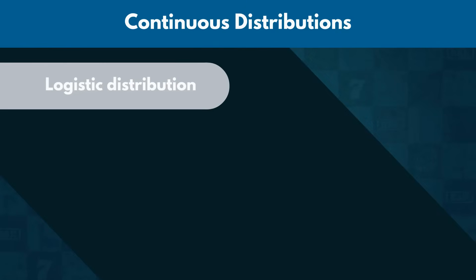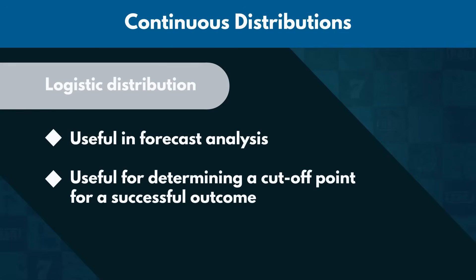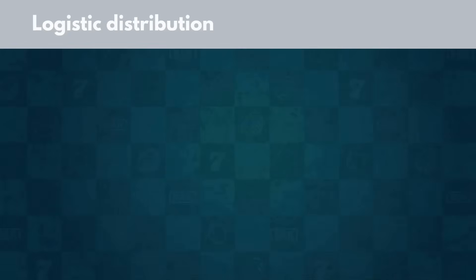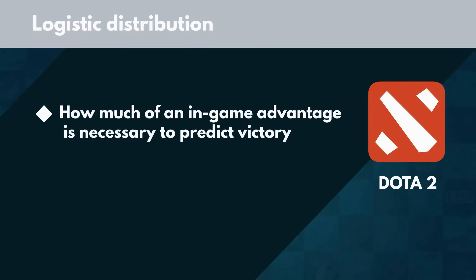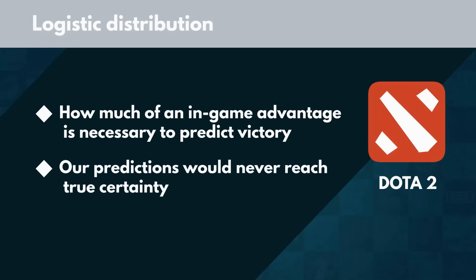The last continuous distribution we will mention is the Logistic distribution. We often find it useful in forecast analysis when we try to determine a cut-off point for a successful outcome. For instance, take a competitive e-sport like Dota 2. We can use a Logistic distribution to determine how much of an in-game advantage at the 10-minute mark is necessary to confidently predict victory for either team. Just like with other types of forecasting, our predictions would never reach true certainty.